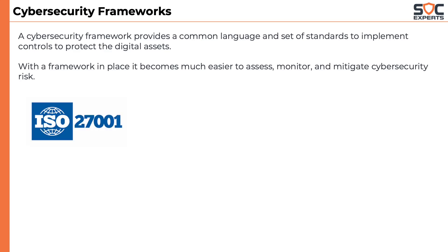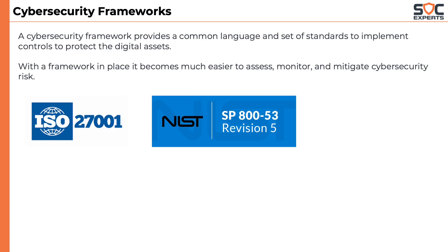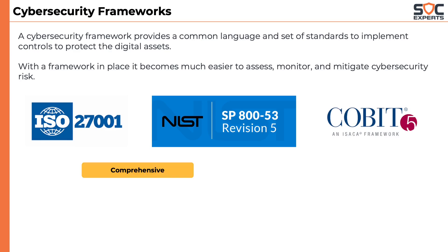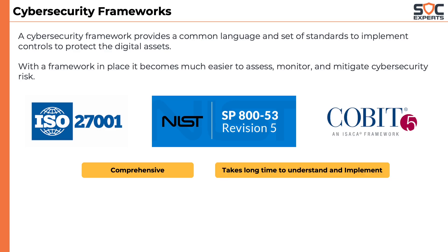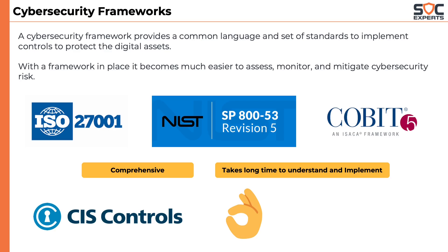Popular frameworks include ISO 27001, NIST 853, COBIT, etc. Most of these frameworks are comprehensive and have excellent coverage of a wide area of cybersecurity, but understanding and implementing them could be overwhelming and could take a long time. However, there is another framework which is pretty straightforward and easy to follow and implement — that is CIS Critical Controls. The CIS framework is best suited for companies that have little to no cybersecurity practices. I am not saying that CIS is the best amongst all frameworks; I am just saying it is best for companies in the early stage of cybersecurity practices as it is easy to understand and implement.